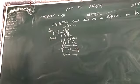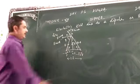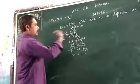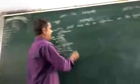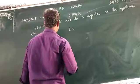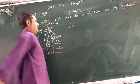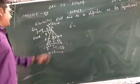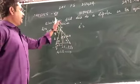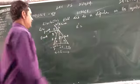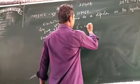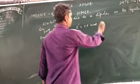E sin theta and E sin theta will get cancelled. So the resultant field, which I'm writing as E prime, will be E prime = 2E cos theta.